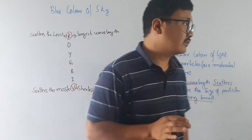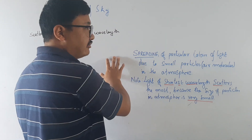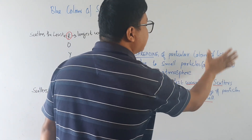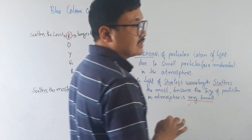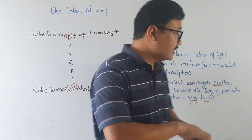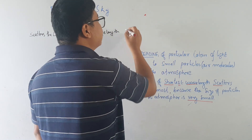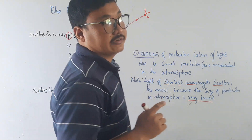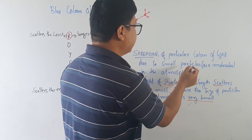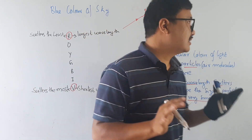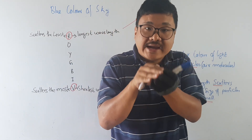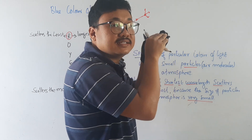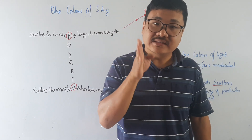Scattering is something different — do not be confused. Scattering is the spreading of a particular color of light due to small particles — air molecules and air atoms in the atmosphere. For example, if red light comes and hits a particle and spreads out like this, that is called the scattering of light. In dispersion, white light was split into seven colors, but here the red light itself is spread. This is the spreading of light — that is what we call scattering of light.